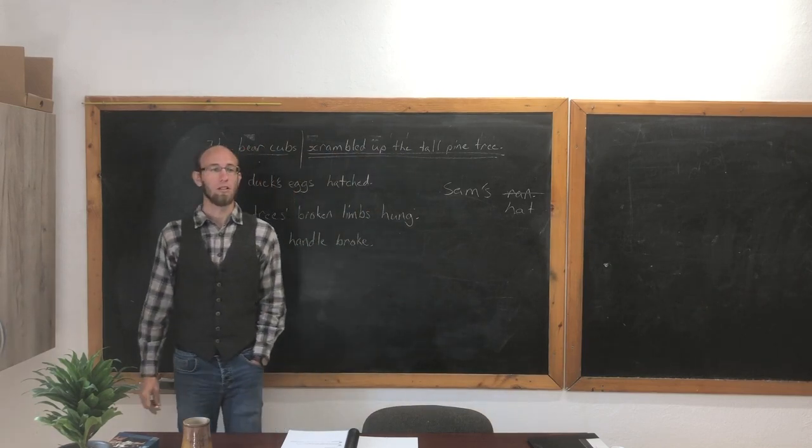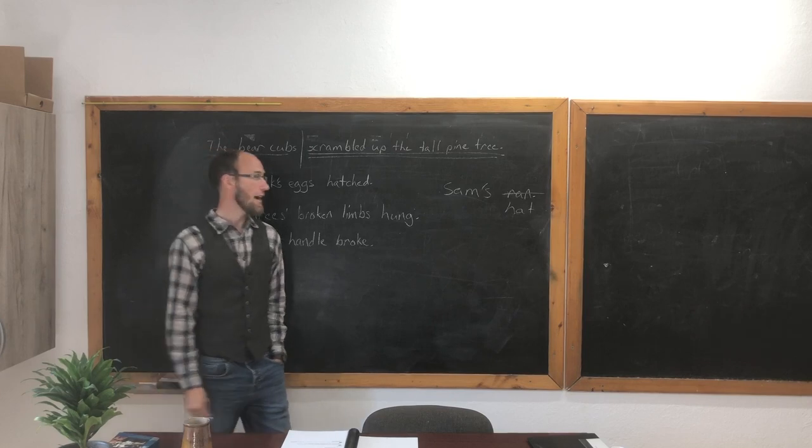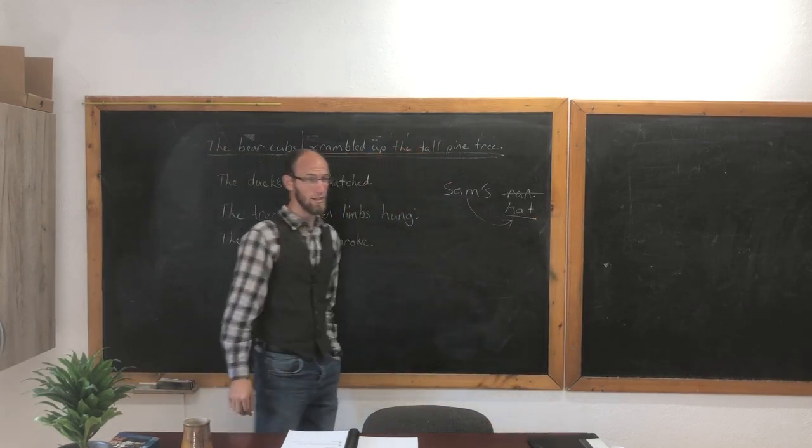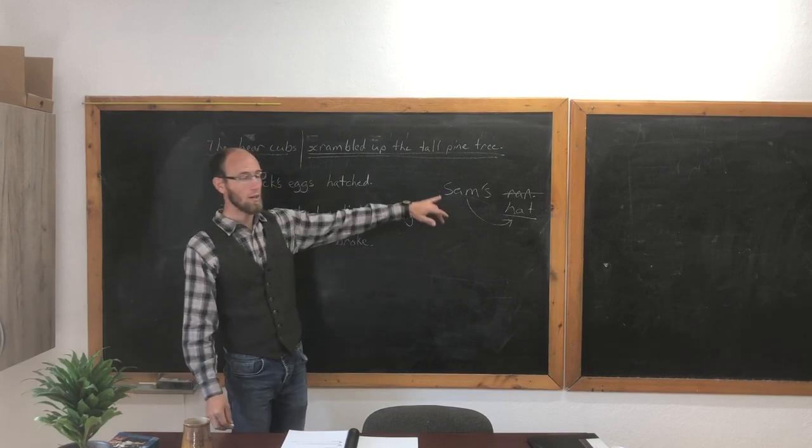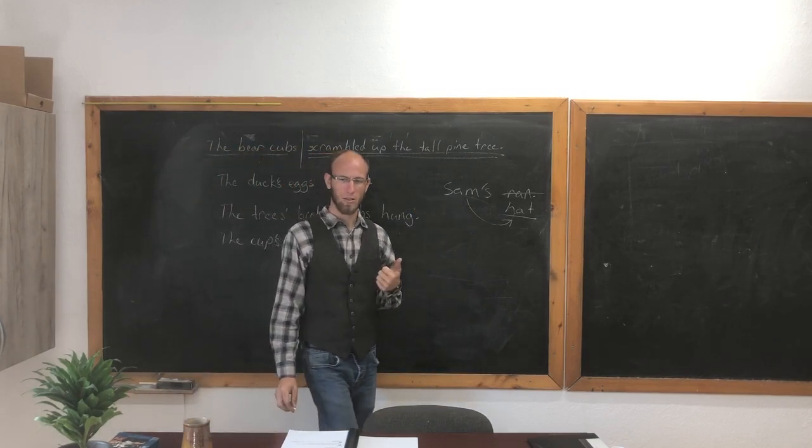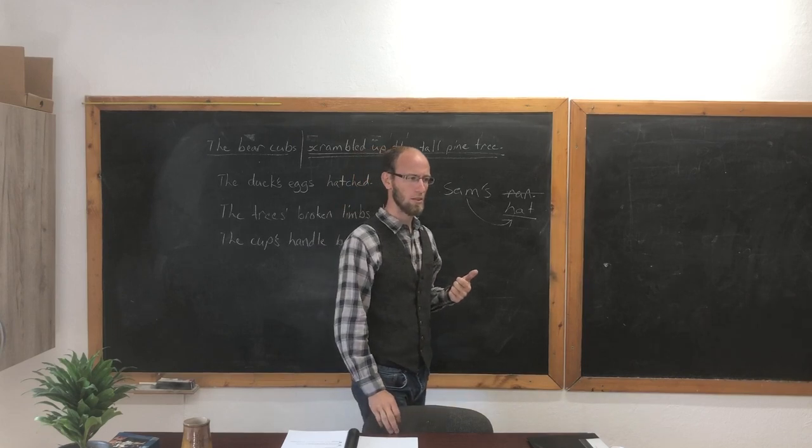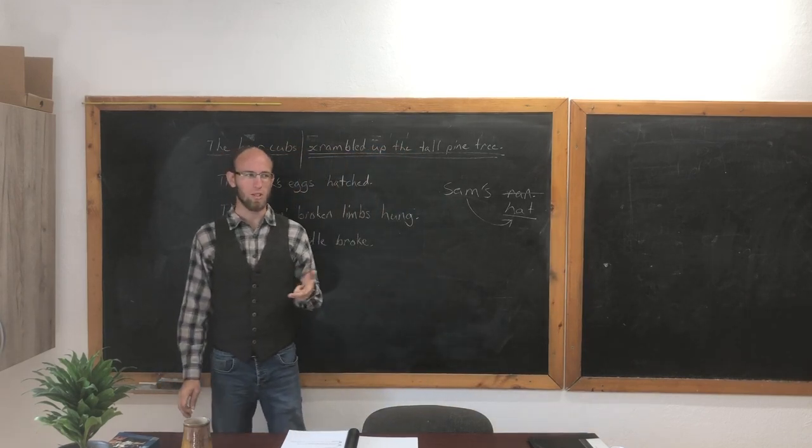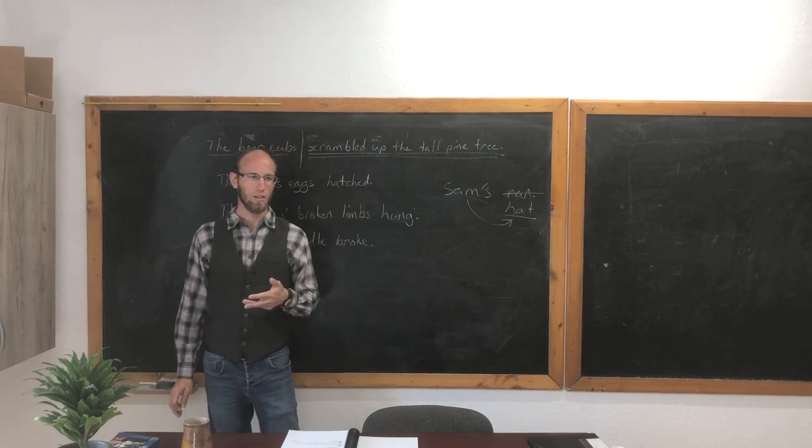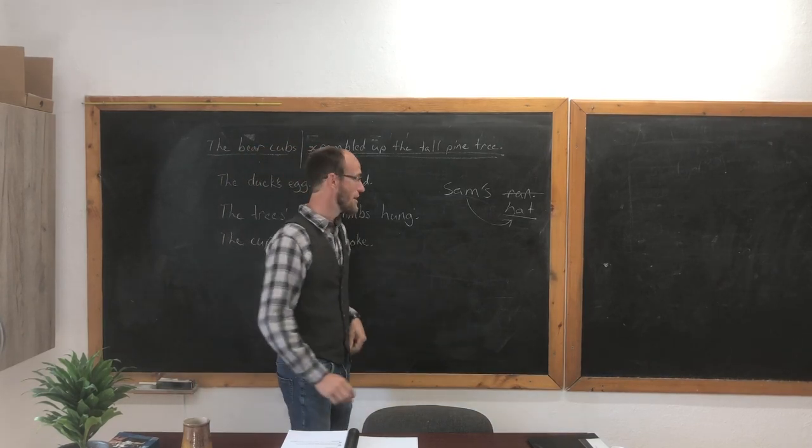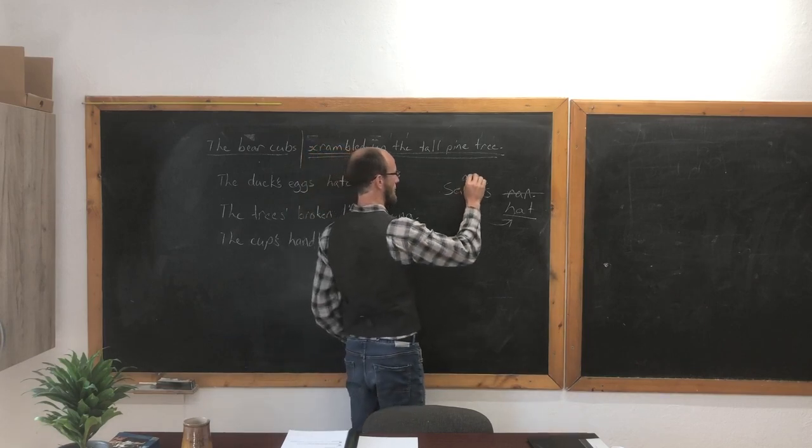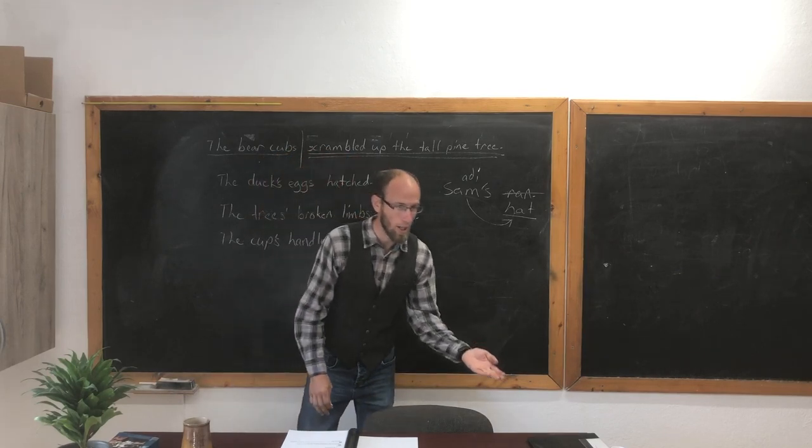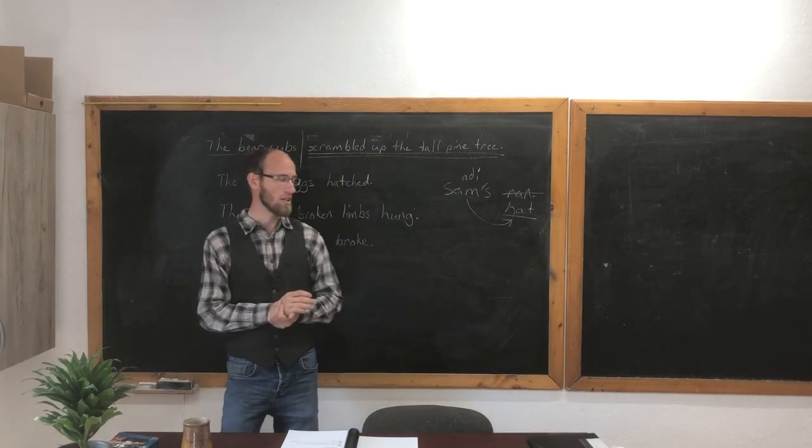No, what is the noun? Hat. And Sam is telling whose hat it is. So words that tell whose are what part of speech? Which words tell whose? What kind? Which? How many? Adjectives! You nailed it! So it becomes an adjective. Sam changes from a noun to an adjective. What was a noun, when we make it possessive, becomes an adjective saying whose.